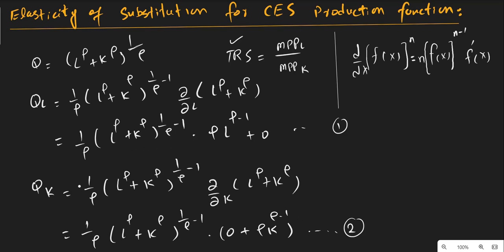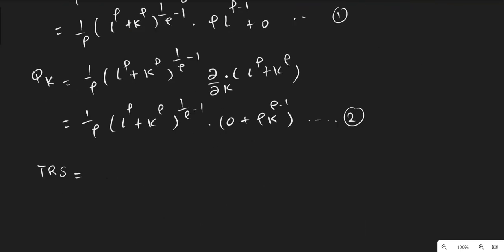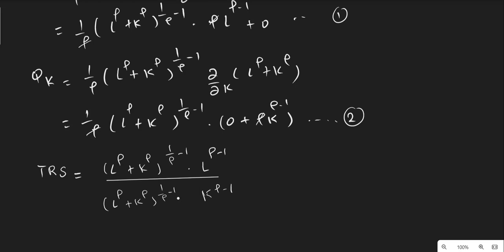This is the marginal physical productivity of capital, and this is the marginal physical productivity of labor. Now we divide equation one by equation two to get the technical rate of substitution. It should be noted that we can cancel this ρ with this ρ, and we can also cancel out these ρ terms to make the expression simpler. Dividing equation one by equation two, we get this expression. We can cancel out these terms and are left with L divided by K.